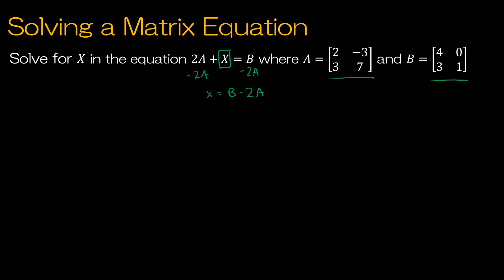So I'm going to find X. It's going to be B — which is 4, 0, 3, 1 — minus 2 times A. I'm going to multiply A by negative 2: negative 2 times 2 is negative 4, negative 2 times negative 3 is positive 6, negative 2 times 3 is negative 6, and negative 2 times 7 is negative 14.